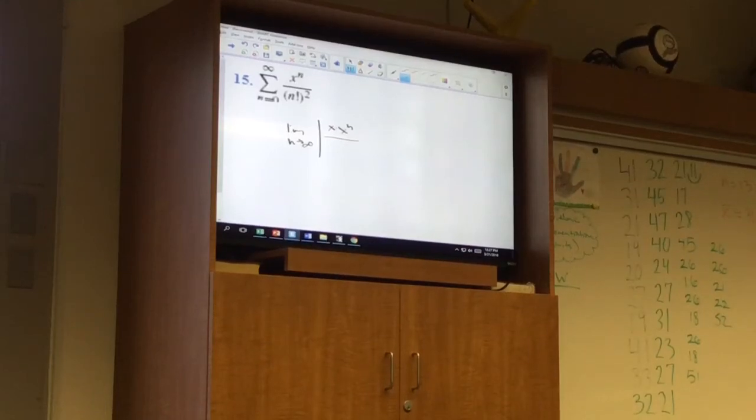squared, but for the n plus first term, this is n plus 1 factorial squared times n factorial squared over x to the n. This has to be less than 1, right? So now let's look at this. What is n plus 1 factorial as it relates to n factorial? n plus 1 times n, and then that whole thing is squared. Agreed?